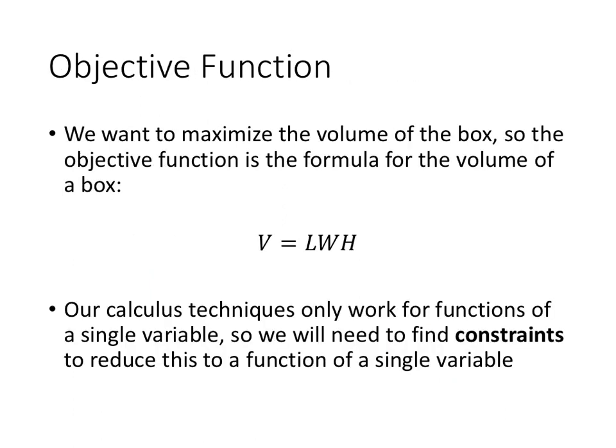So thinking back to the outline that we had earlier, our objective function is the volume of the box. That's the thing that we want to maximize. And the volume of a box is length times width times height. Now obviously that formula, length times width times height, is not useful for us yet. It's got too many variables in it. But now we need to look for the constraints in the problem to reduce that down to a single variable.